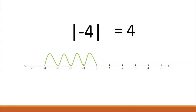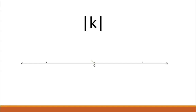What other number on the number line has an absolute value of four? You can see that there are two numbers with a distance of four from zero, namely four and negative four. The same holds true for any absolute value, because there are always two numbers on the number line that are the same distance away from zero.